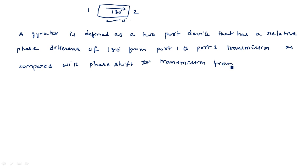So the gyrator is defined such that when the signal is traveling from port 1 to port 2 it will have a phase shift of 180 degrees, whereas when it is traveling in the reverse direction — from port 2 to port 1 — there is no phase shift, that is 0 degrees phase shift.